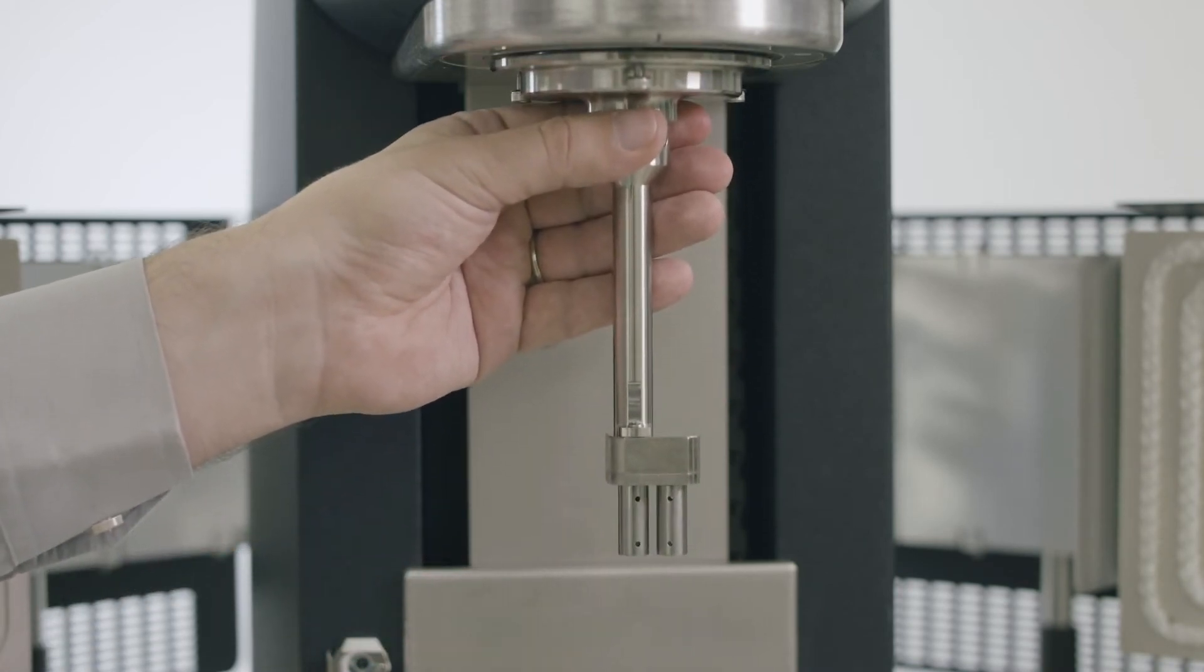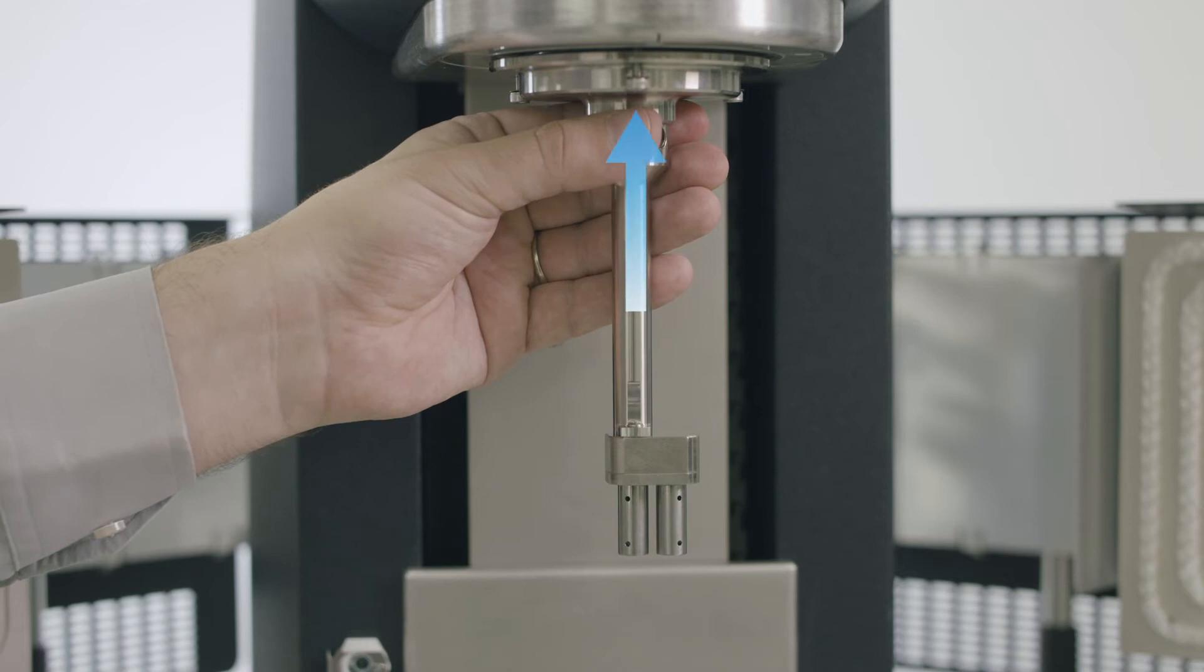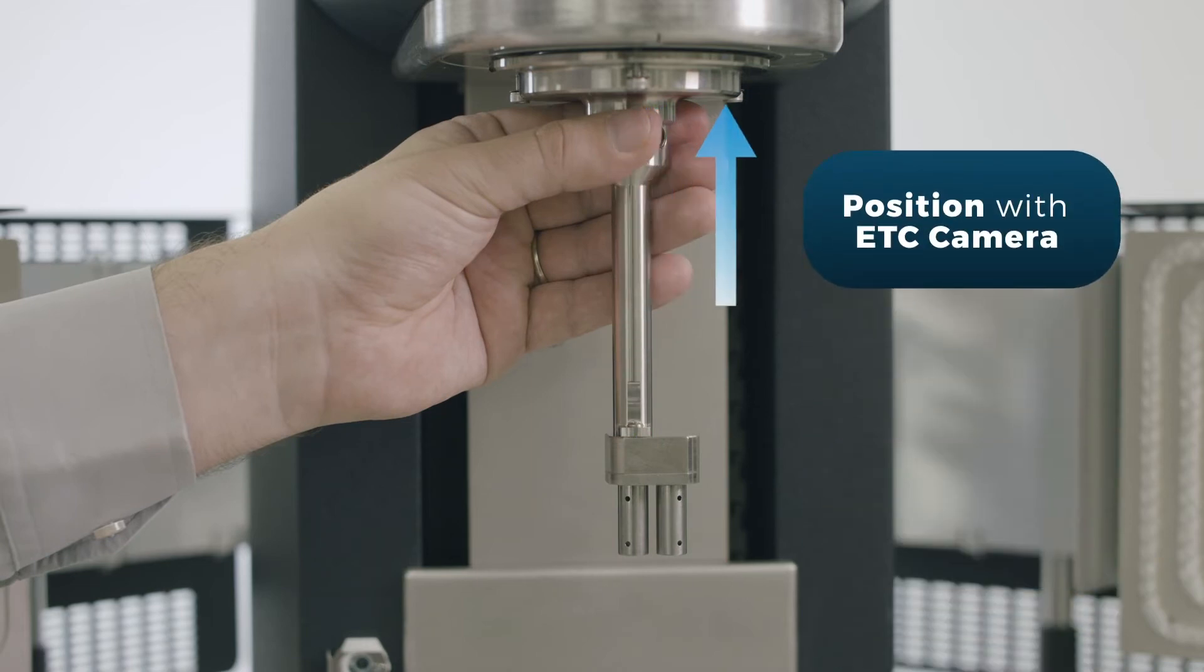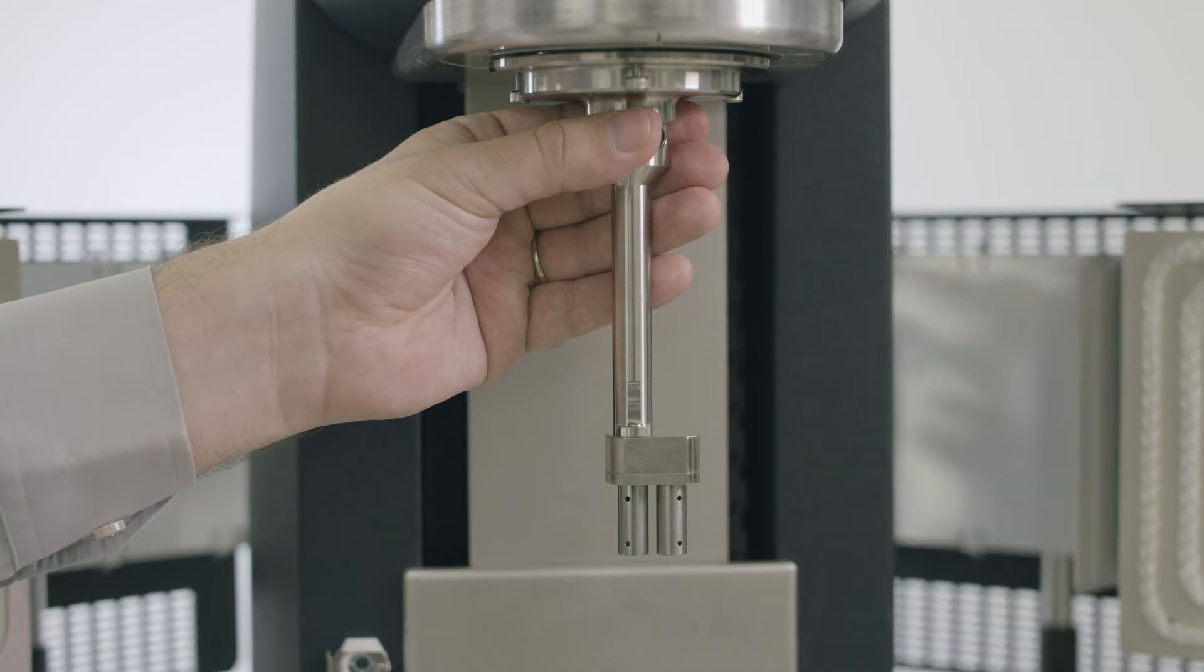The mark on the EVA assembly can be lined up with a mark on the front of the rheometer if not using the ETC camera. If the ETC camera will be used, rotate the geometry so that the mark is facing the back right of the instrument. This will ensure that the sample faces the camera.